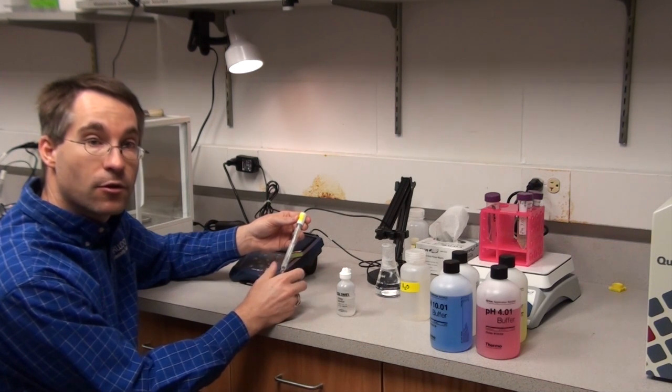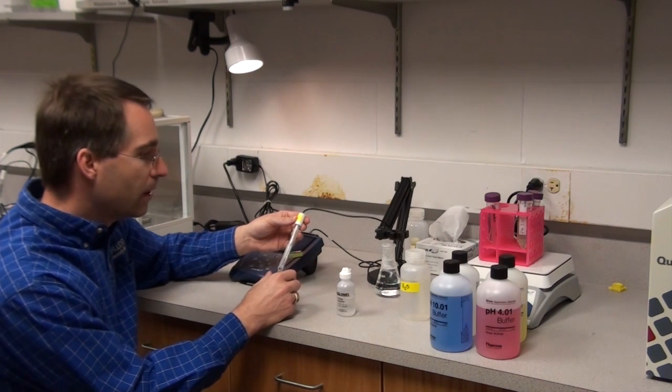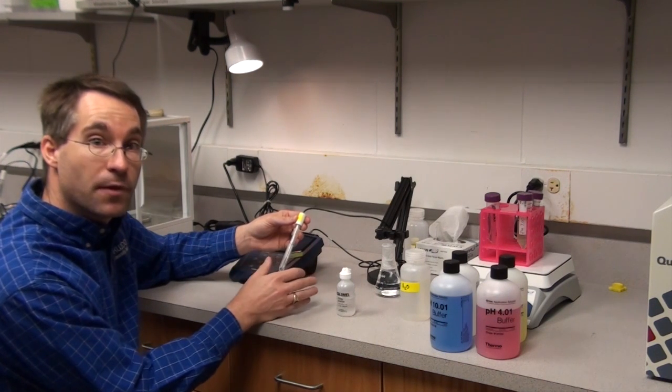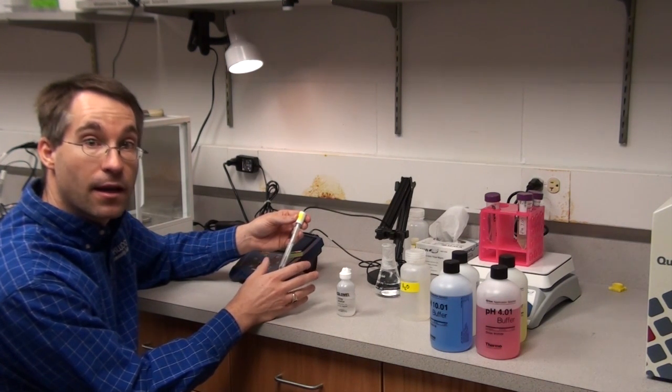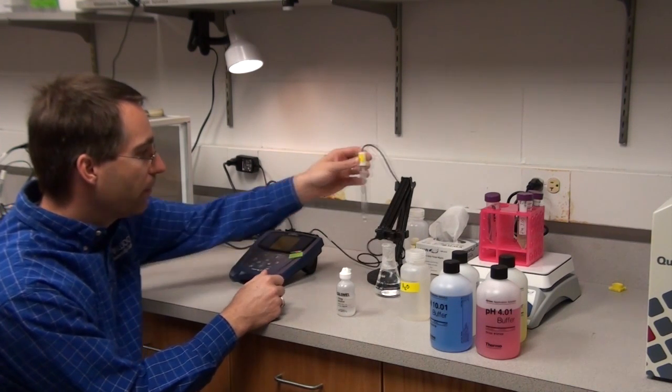It has been shown that silver chloride will interact with Tris and destroy the probe and throw off your readings. So make sure if you are using a Tris buffer, which is really common in a molecular biology lab, use a Calomel probe or another type of probe that is compatible with that type of buffer.